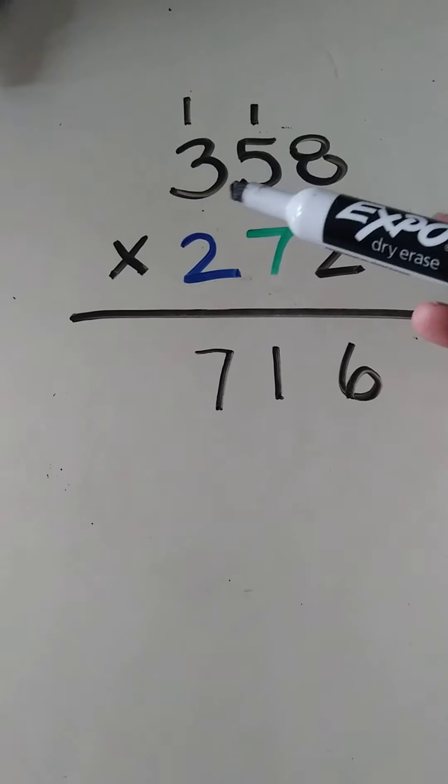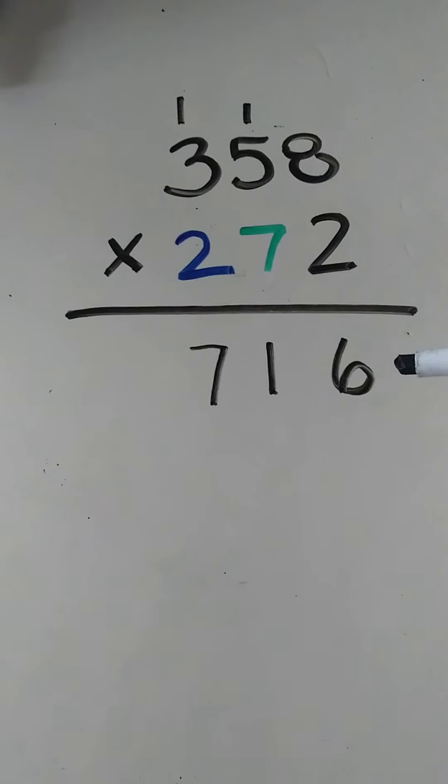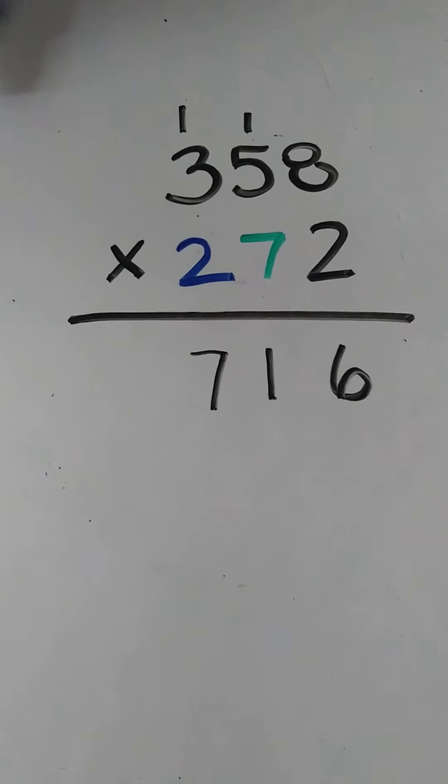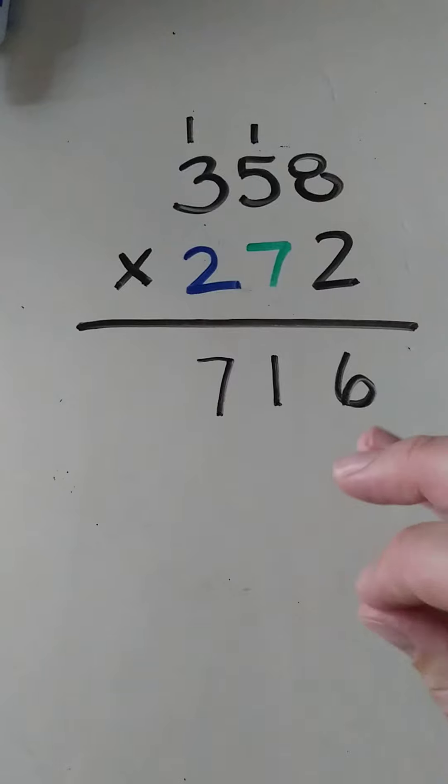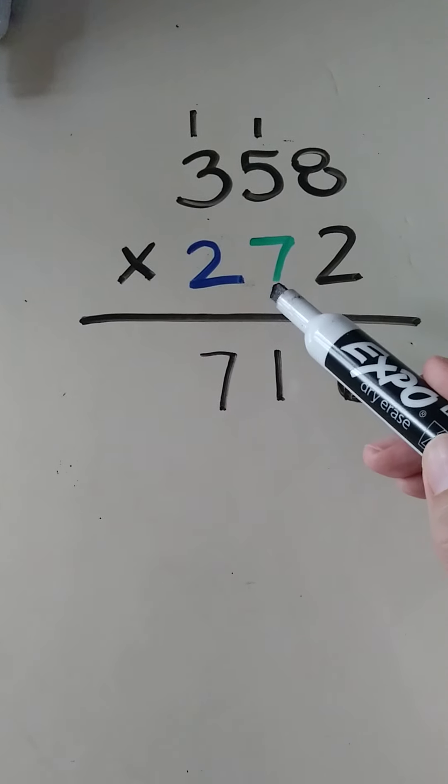Okay, so now I just did 358 times 2 and that's 716. So now I'm going to change gears a little bit. I'm going to do the same thing and multiply the next digit, which is the 7 here, but the 7 is in the tens place.